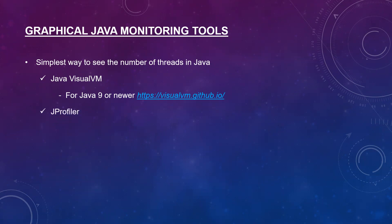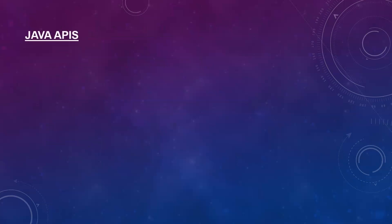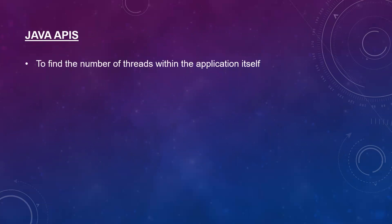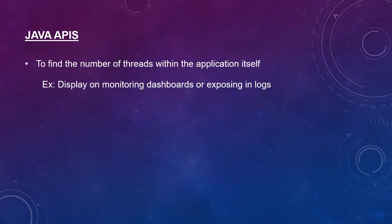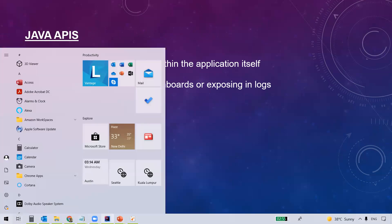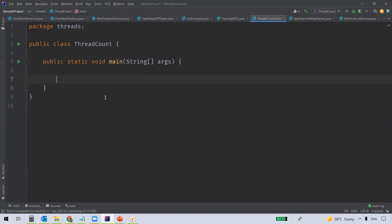There are many other tools as well — JProfiler, JDK Flight Recorder (EverKit), NetBeans Profiler — all these are other Java monitoring tools which we can use to find thread information. In some cases, we want to know the thread count information within the application itself — for example, to display thread states on monitoring dashboards or to print them in logs. In such cases, we can get thread information using the Java APIs.